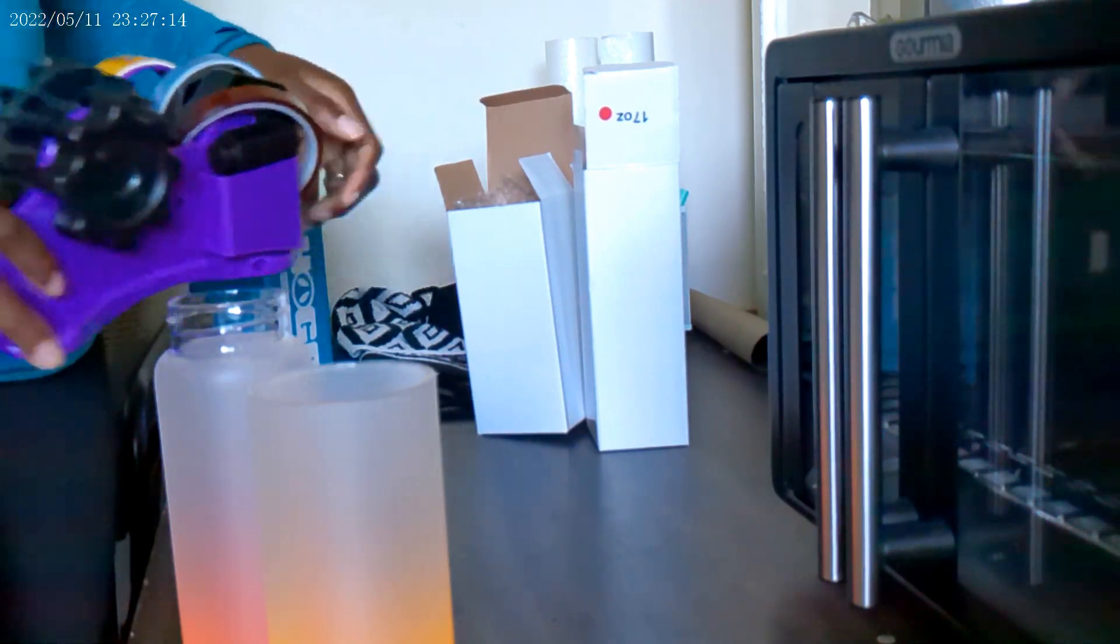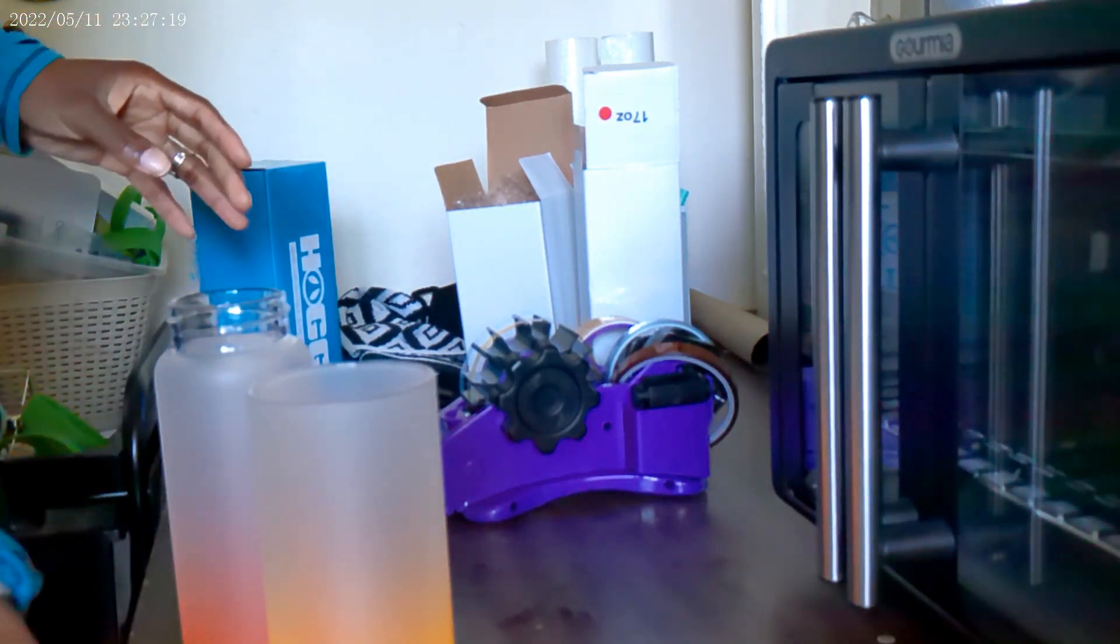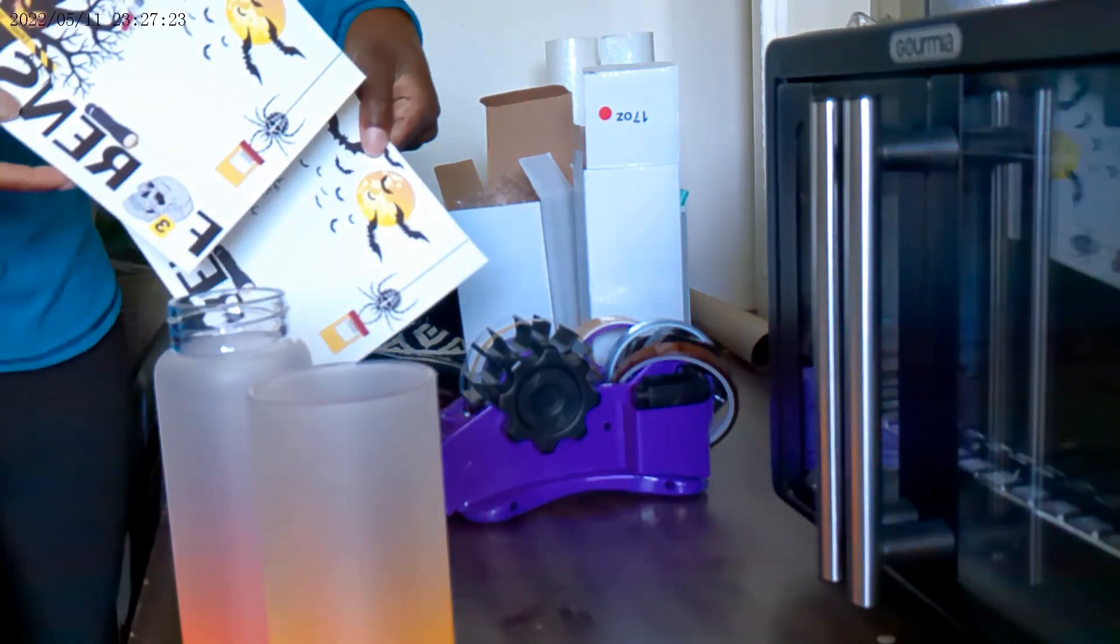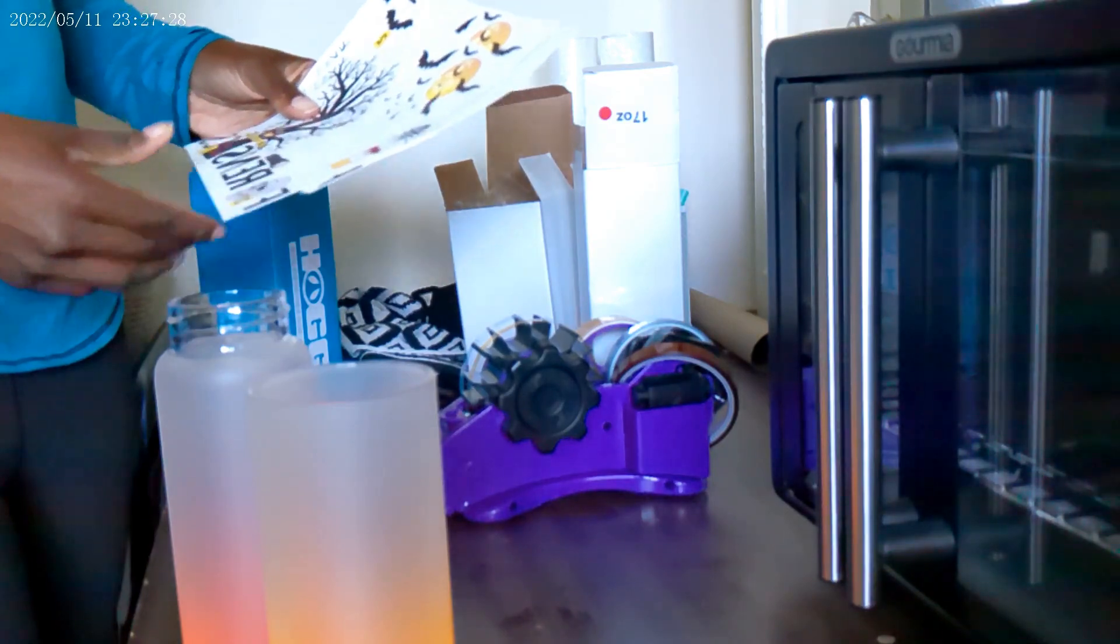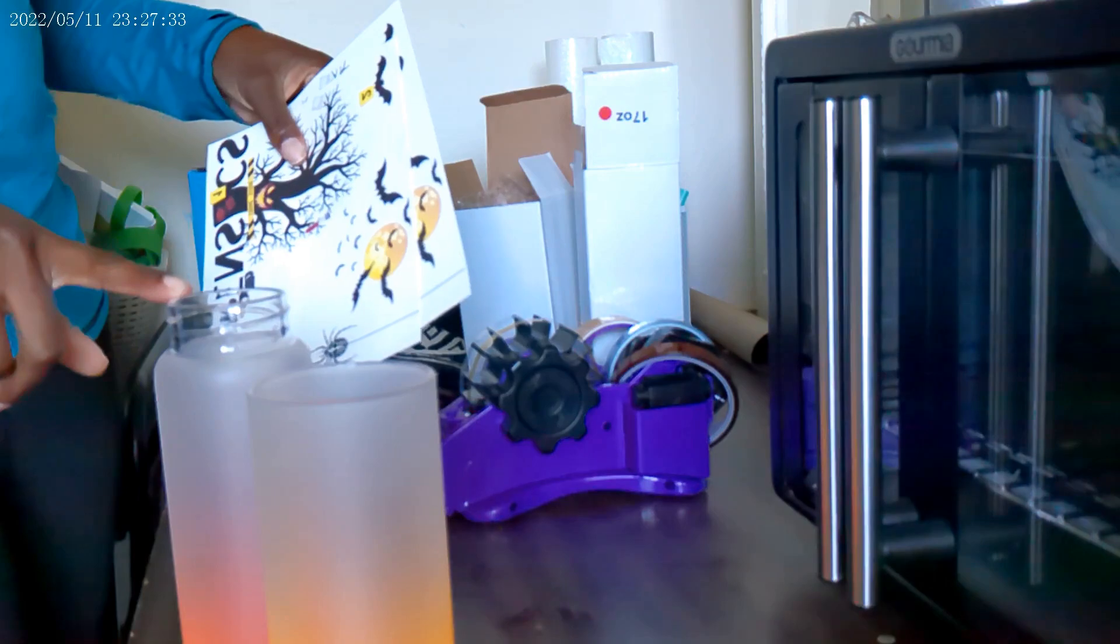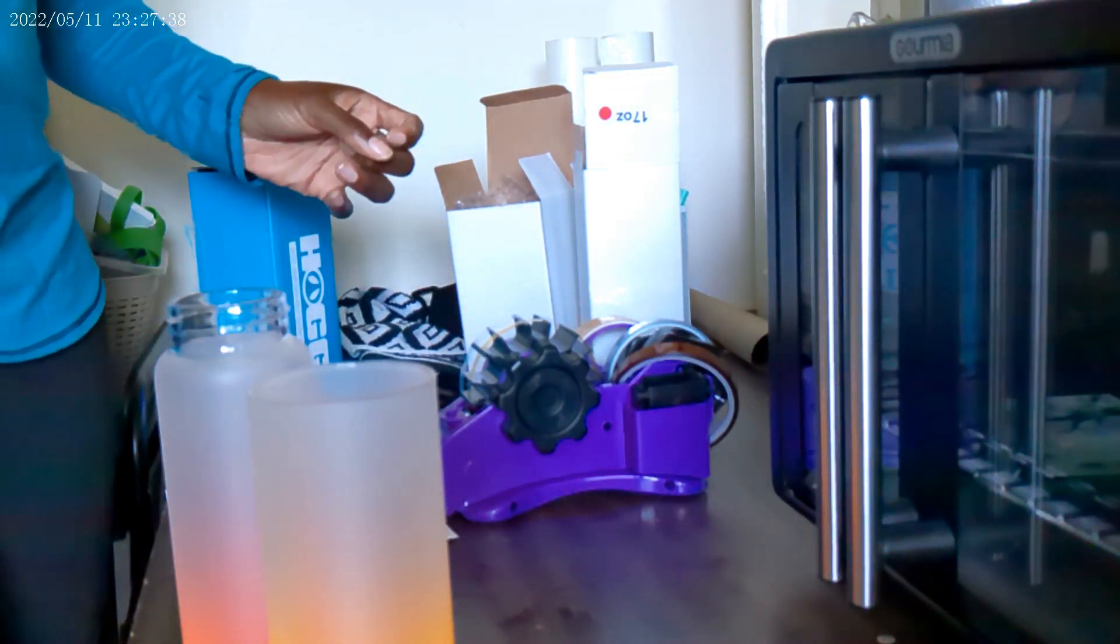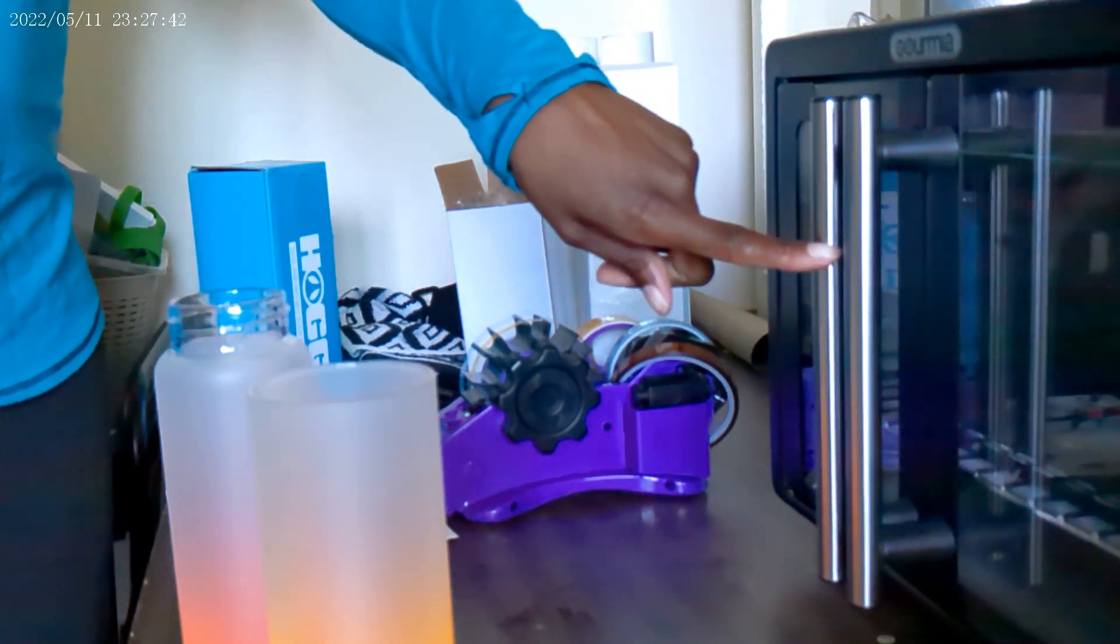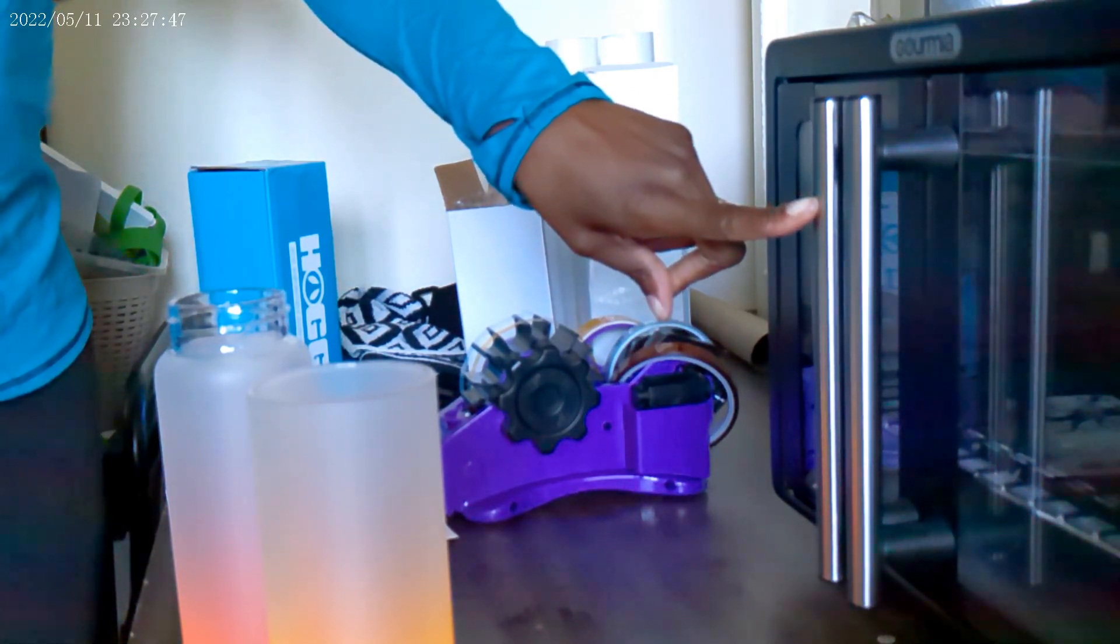You'll need some heat tape. You'll need whatever design that you're going to be using. Make sure that you size them correctly. So I already pre-measured all of these to make sure that they will fit the tumblers. And then you will need, in this case I'm going to be using this convection oven in order to complete the sublimation process.